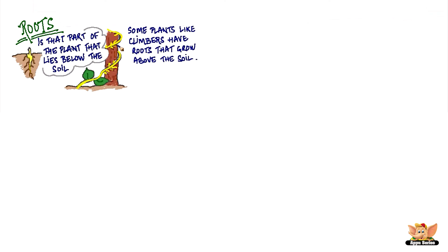However, some plants like climbers have roots that can grow above the soil. These are called aerial roots. Aerial roots help plants like climbers to get attached to tree barks and walls easily.